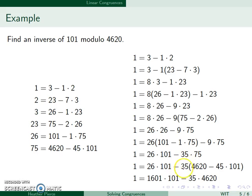We have 4620 minus 45 times 101. I see the negative 35 times 4620, and then this term comes from the negative 35 times negative 45, and then adding the 26. The actual inverse of 101 is the number in front of 101. 1601 is the inverse of 101 mod 4620.